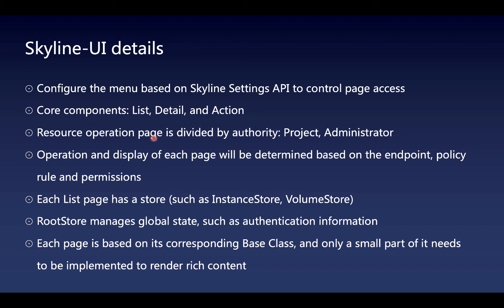The resource operation page is divided by authority. The project admin and the system admin have different operation panels. Whether these pages are accessed or operations are allowed depends on endpoint policy rules and permissions. Each list page has a store such as instance store or volume store. The root store manages global states such as authentication information. Each page is based on its corresponding base class. The base class only requires small amounts of code to be rewritten, and it greatly reduces code duplication. I will talk about the base list, base detail, and base action components.